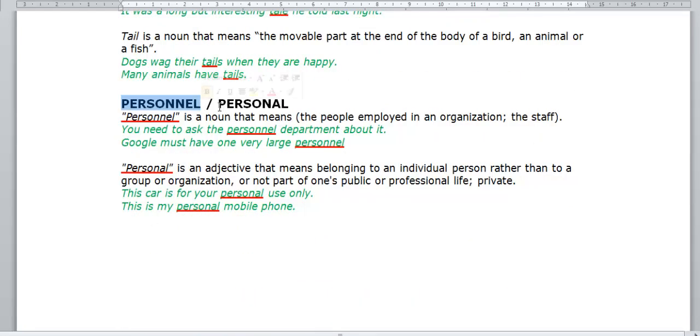Personnel and personal. Personnel is a noun that means the people employed in an organization, the staff. You need to ask the personnel department about it. Or, Google must have one very large personnel. Personal is an adjective that means belonging to a person rather than to a group or an organization. It belongs to one person. Or, it's not part of a person's public or professional life. It is private. For example, this is for your personal use only. Only for you. Or, this is my personal mobile phone.